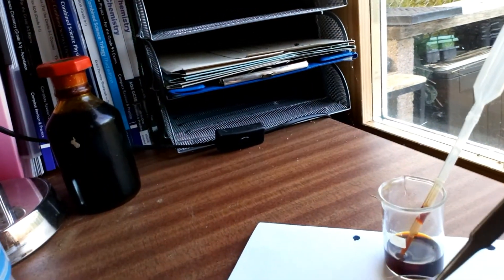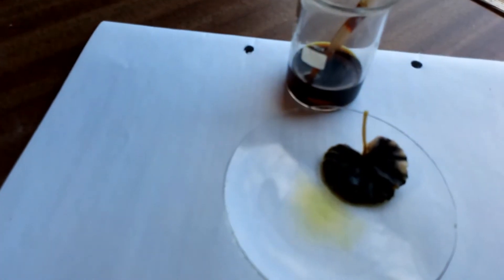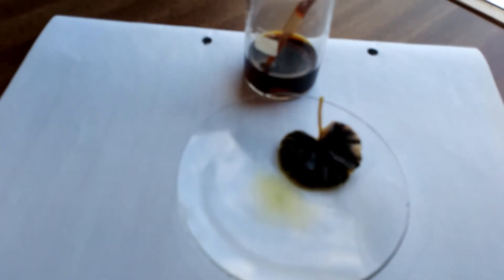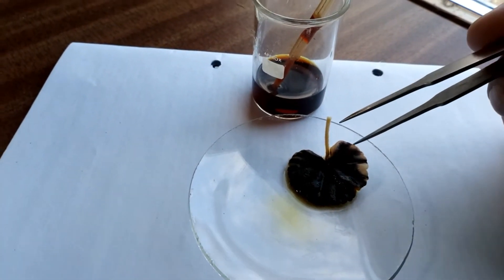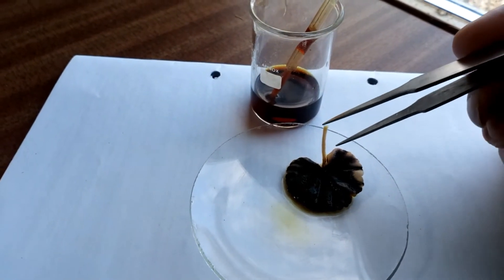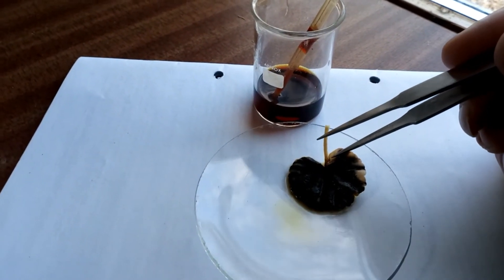So there we have tested a leaf for starch and found that that leaf contains starch, except for these small areas here and just round here.